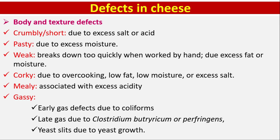Defects in cheese — Body and texture defects: Crumbly or short, due to excess salt or acid. Pasty, due to excess moisture content. Weak, breaks down too quickly when worked by hand, due to excess fat or moisture. Corky, due to low cooking, low fat, low moisture, or excess salt. Mealy, associated with excess acidity. Gassy — early gas defects due to coliforms.